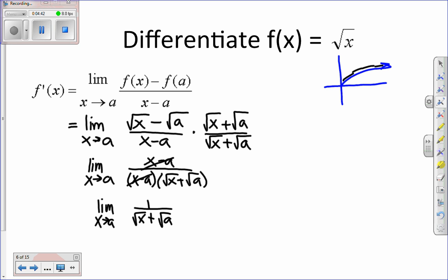And now if I substitute the value as x approaches a into the function, so we replace x with a, I end up with 1 over square root of a plus square root of a, or another way of writing this, or is 1 over 2 groups of square root of a. And that would be the function for the derivative as x approaches a.